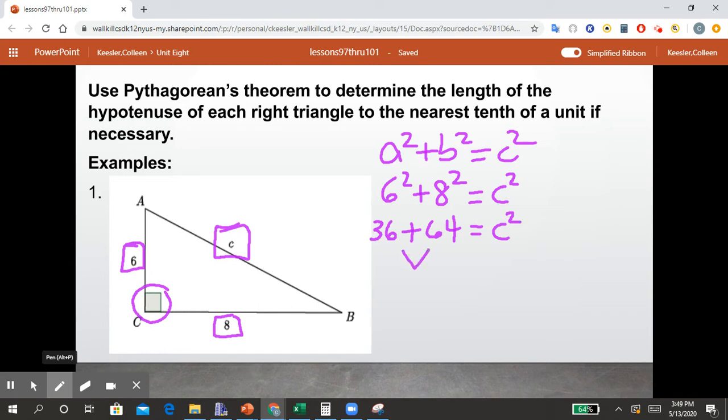Add the 36 and the 64, we get 100, leaving C squared, and our last step is to get rid of the square. Now 100 is a perfect square, and we know there are actually two answers, 10 and negative 10, but because we're talking about a length here, we only need the principal square root. So our answer is C equals 10. Let's try another.